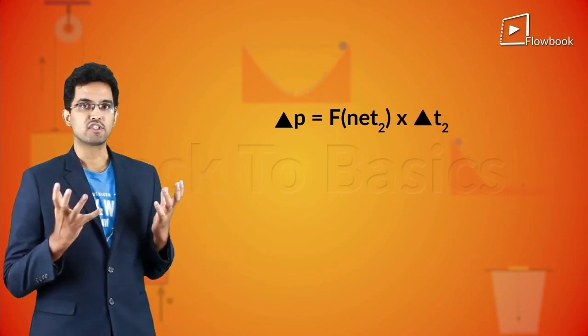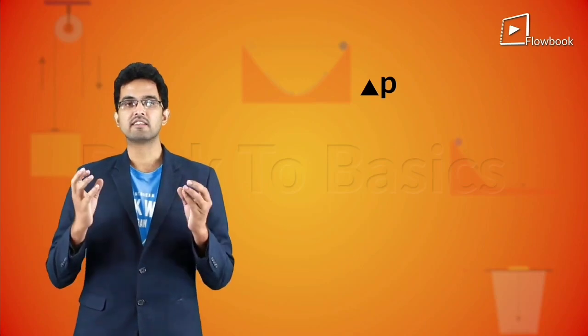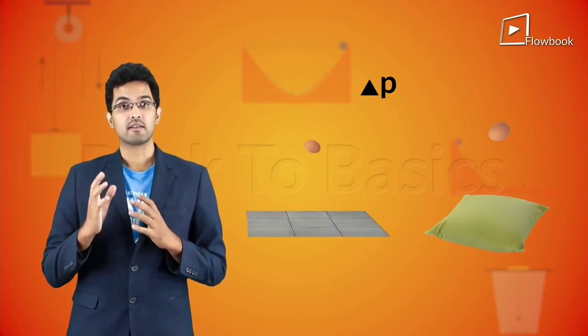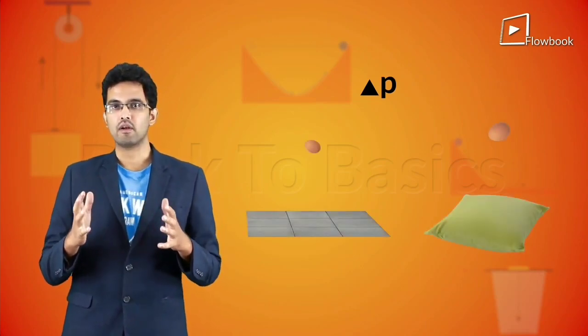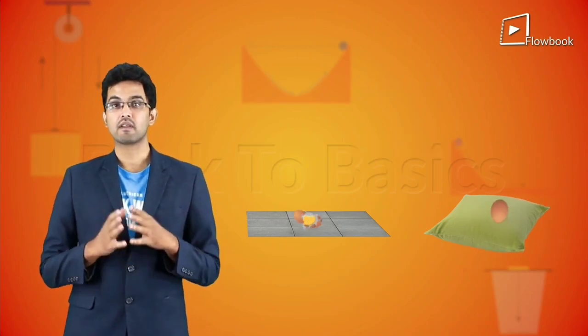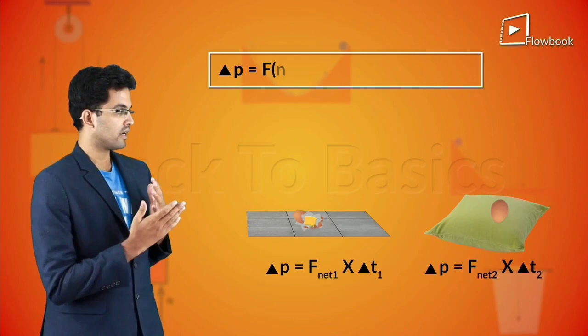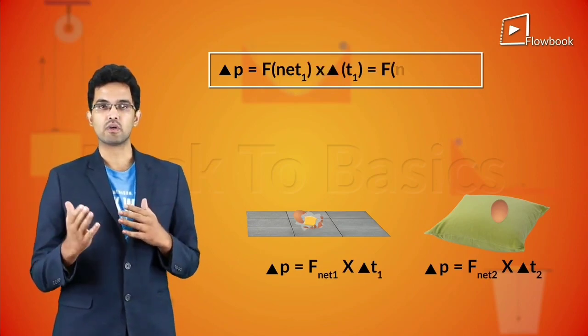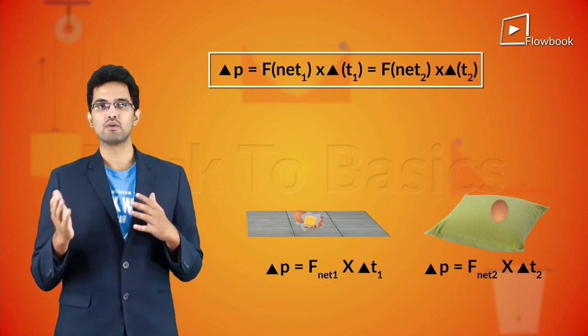As you can see, the change in momentum for the egg is the same in both the cases. Just before hitting the floor or the pillow, both eggs have the same speed and come to rest finally. Therefore, f net 1 into del t1 is equal to f net 2 into del t2.